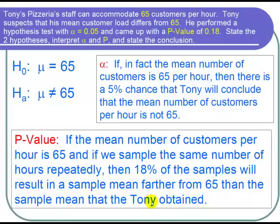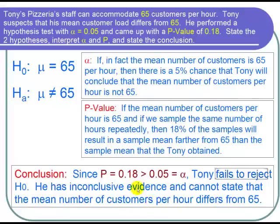So now let's state our conclusion. We have p equals 0.18, and that's certainly bigger than 0.05, which is alpha. And when p is bigger than alpha, we fail to reject the null hypothesis.